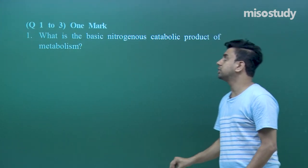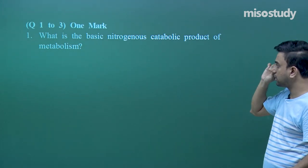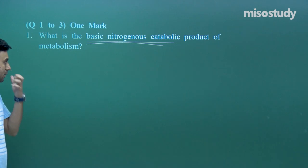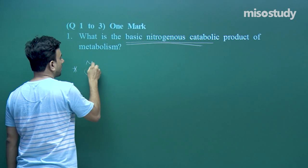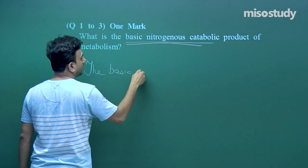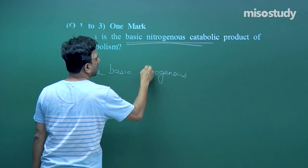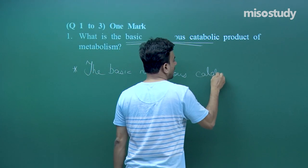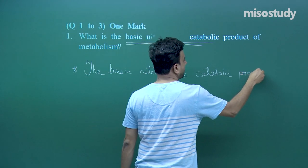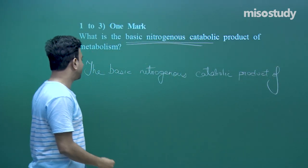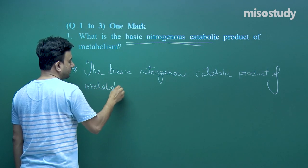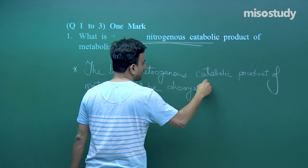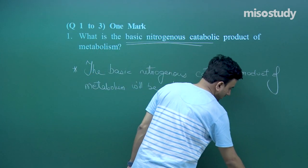Let us start with the first question: what is the basic nitrogenous catabolic product of metabolism? The basic nitrogenous catabolic product of metabolism will always be ammonia.